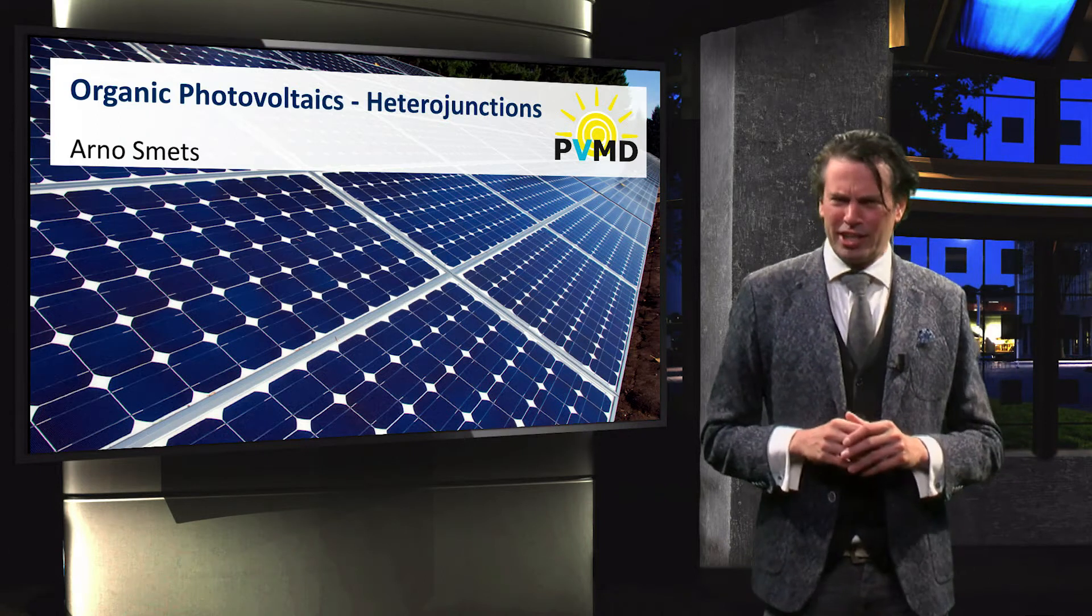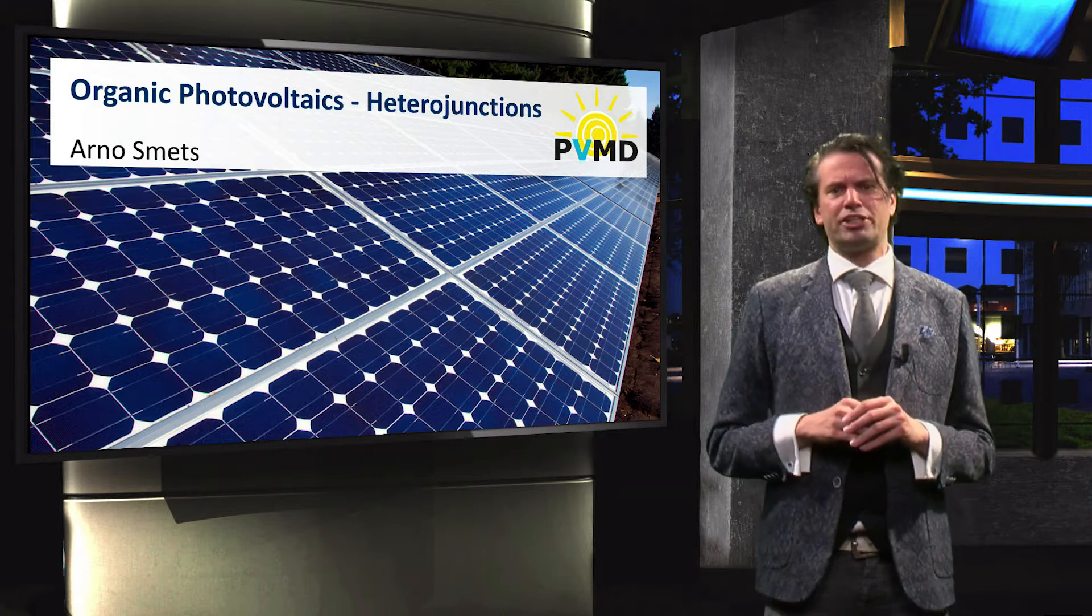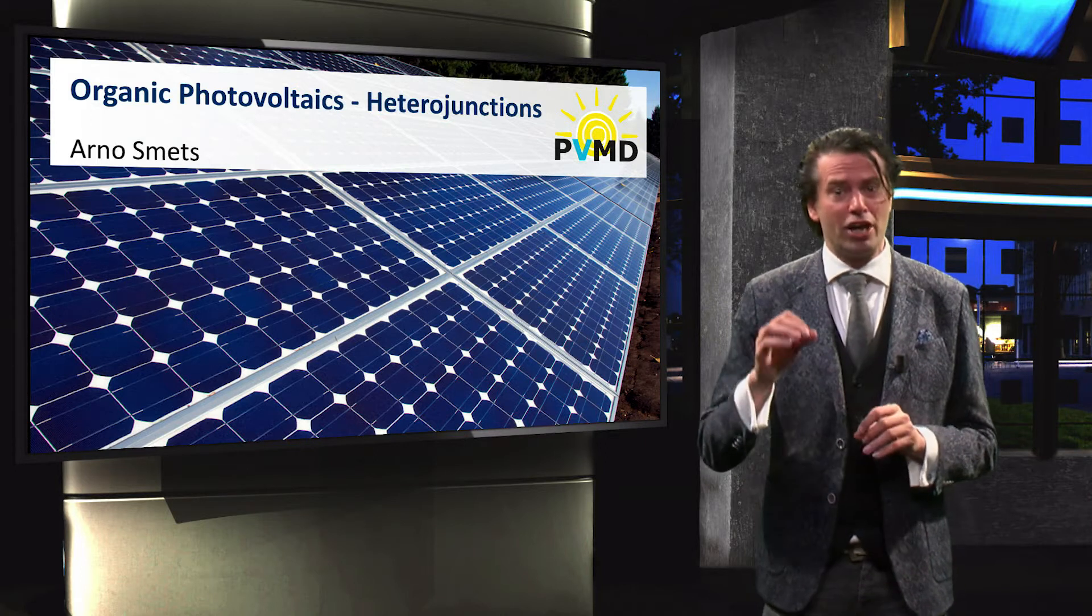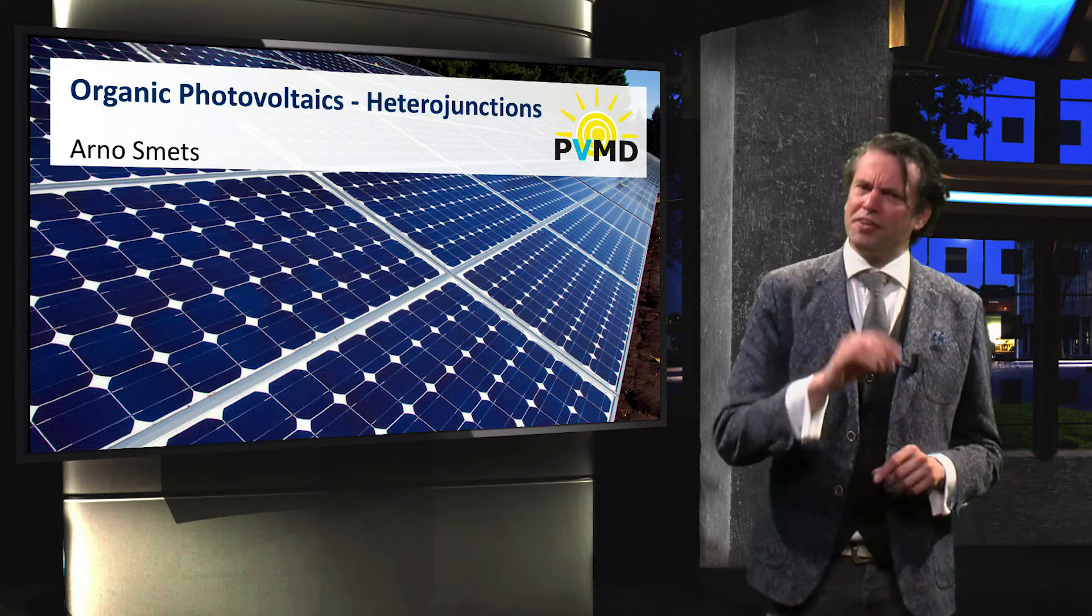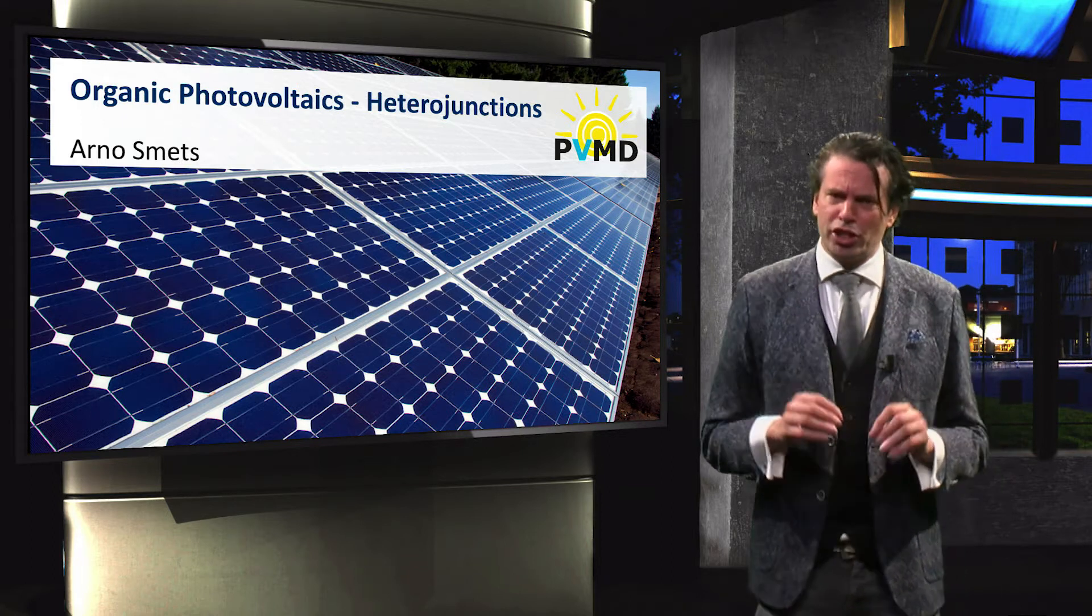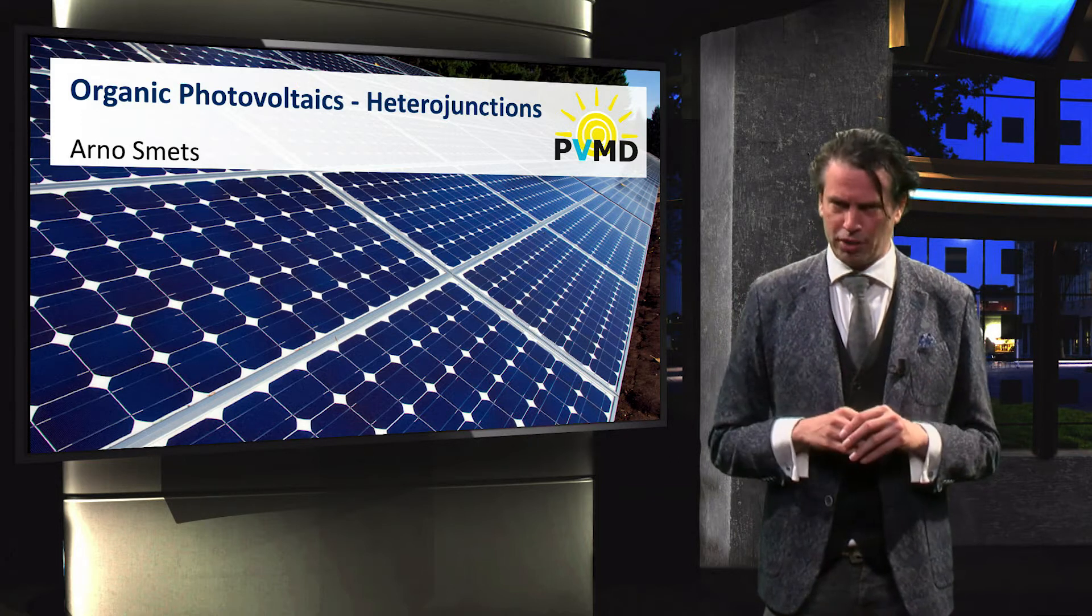In the previous video we started our discussion of organic PV with exciton generation and the material classification of electron donors and electron acceptors. We will now continue our discussion with charge separation and how this works in a typical organic solar cell.